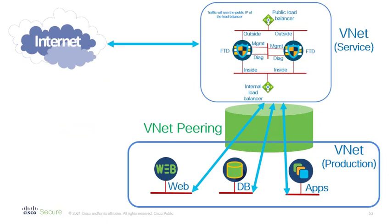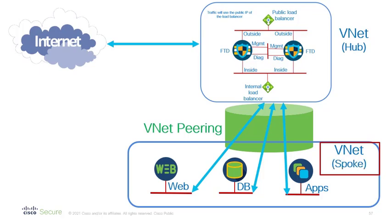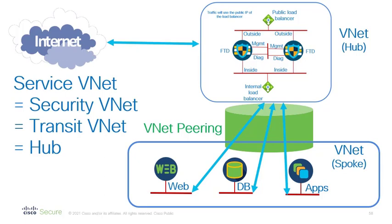This is where we were with our setup. How far away are we from having a hub-and-spoke topology? Why don't we take this service VNet and call it a hub, and take this production VNet and call it a spoke. As you can see, we already have a hub-and-spoke topology — it just might not be obvious because there's only one spoke. The service VNet is sometimes called a security VNet because it's where you put your security devices, and sometimes called a transit VNet because traffic tends to go through it — that's really the hub in our hub-and-spoke environment.